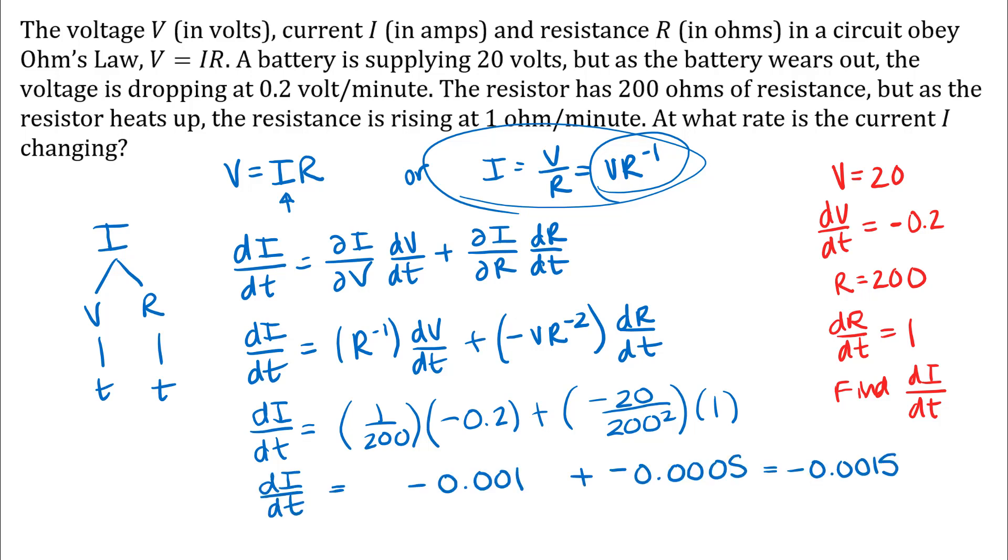So after I do all those calculations, I get negative 0.0015. And then I want to think about units. So the units on my answer would be in whatever the units of I are, that would be in amps, it tells us in the problem, per whatever the units of t are. So that is minutes in this problem. So amps per minute.